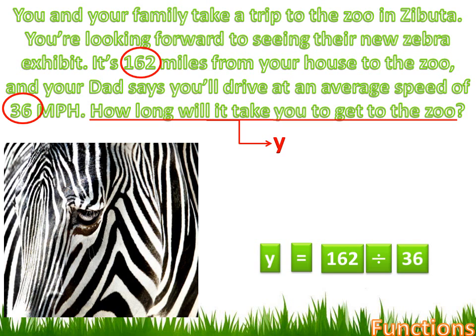Now there's not an X in there — does that mean it's not a function? Not really. Either the 162 or the 36 could be an X, making this a more generic equation. For instance, if I knew I had to go 162 miles but didn't know my average speed, I could change the 36 into X and say Y equals 162 divided by X. Or if I knew my average speed was 36 but didn't know how far I was going, I could call the 162 X and have Y equals X divided by 36.